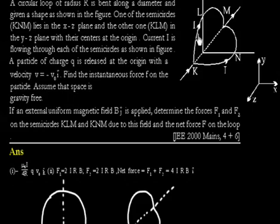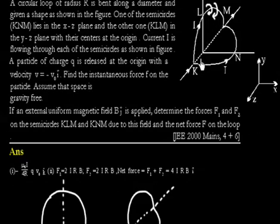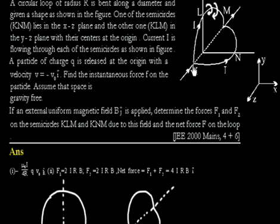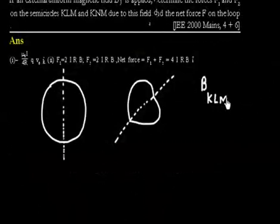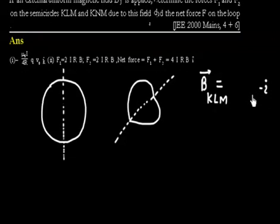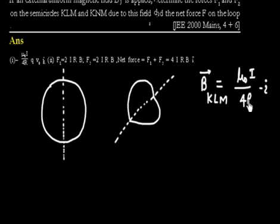If you flow current in this way and use the right-hand rule, the magnetic field lines will flow in this way along the wire. So at this point, due to KLM, the magnetic field is inside — that is, the minus X direction. The magnitude: the full circle has magnetic field μ₀I/2R, so half the circle gives μ₀I/4R. So the magnetic field due to KLM is -(μ₀I/4R)î.